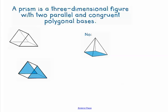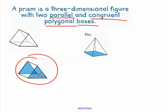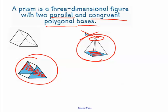We're going to identify some 3D shapes. A prism is a three-dimensional figure with two parallel and congruent polygonal bases. What that means — look at the example. Do you see my bases? They're going to be parallel to each other. This one has a blue base that is parallel and congruent, meaning it's the exact same as the one on the other side. This other one is not a prism because it only has a square base but doesn't have another one on top.